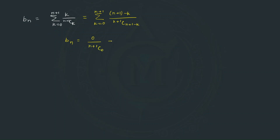Expanding bₙ gives 0 over (n+1)C0 plus 1 over (n+1)C1 plus so on up to (n+1) divided by (n+1)Cn+1.